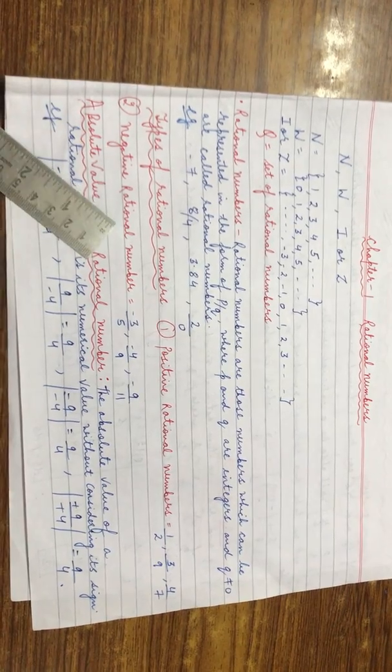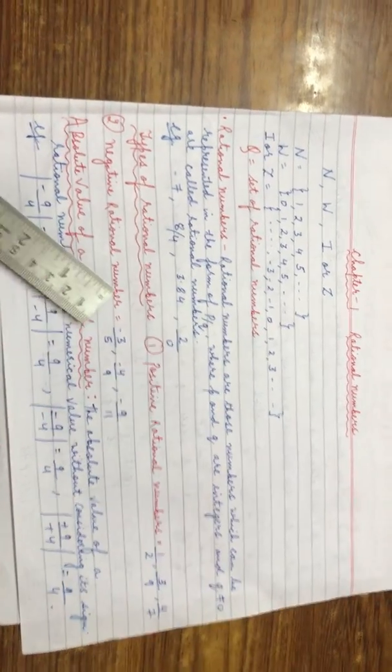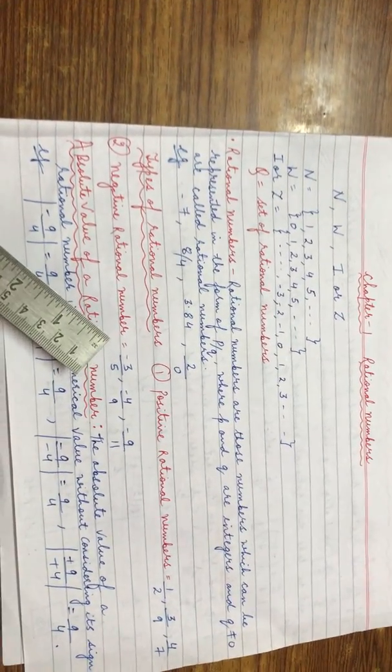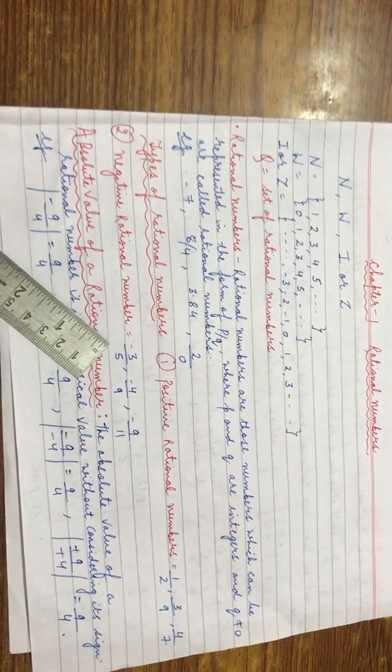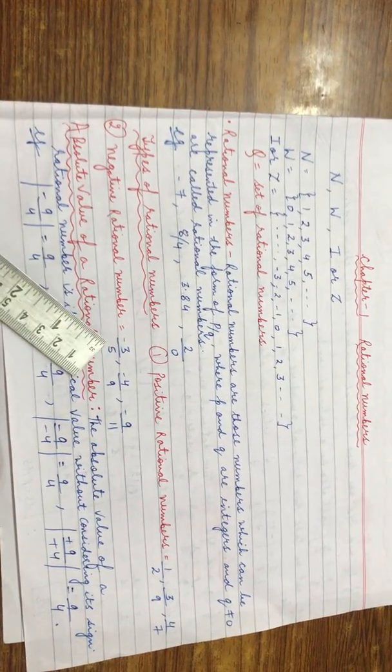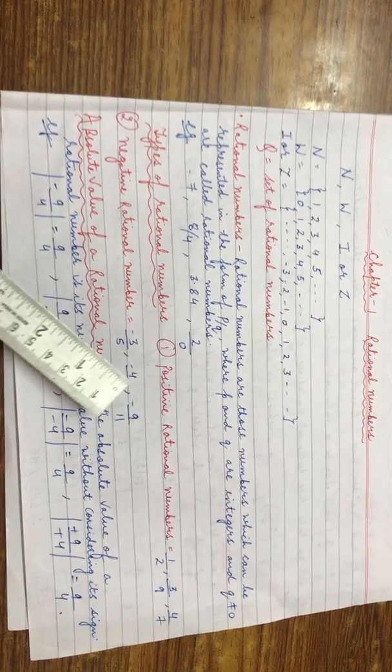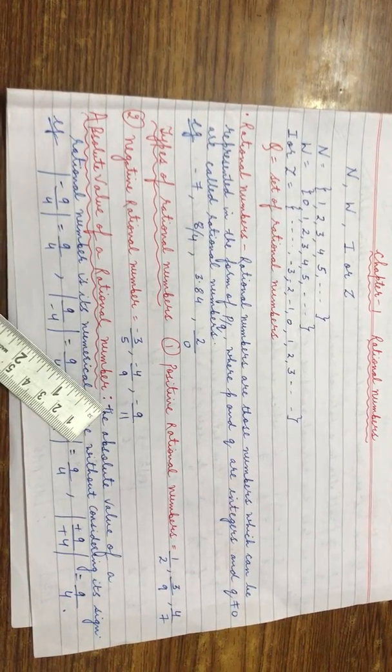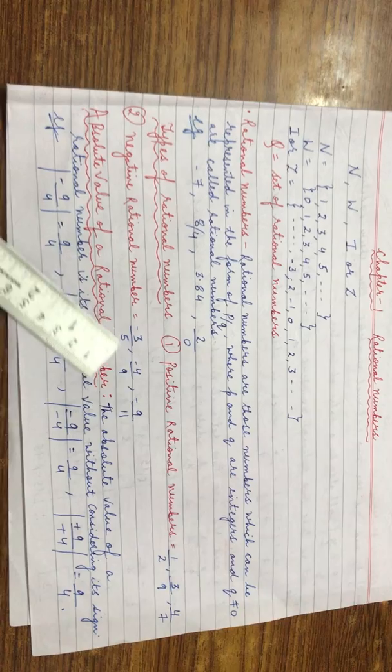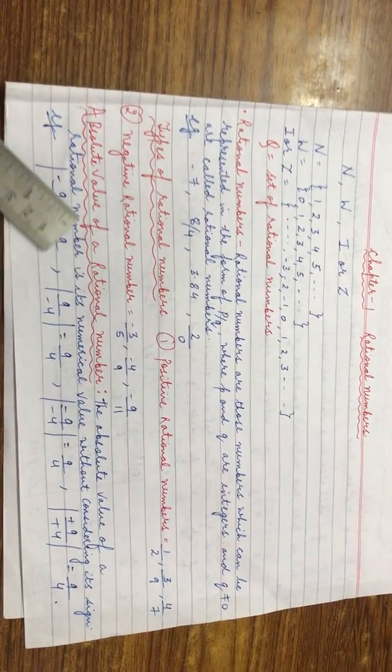Now comes negative rational numbers. In this either P or Q can be negative. Now see the examples: minus 3 by 5, minus 4 by 9, minus 9 by 11. These are the examples of negative rational numbers.